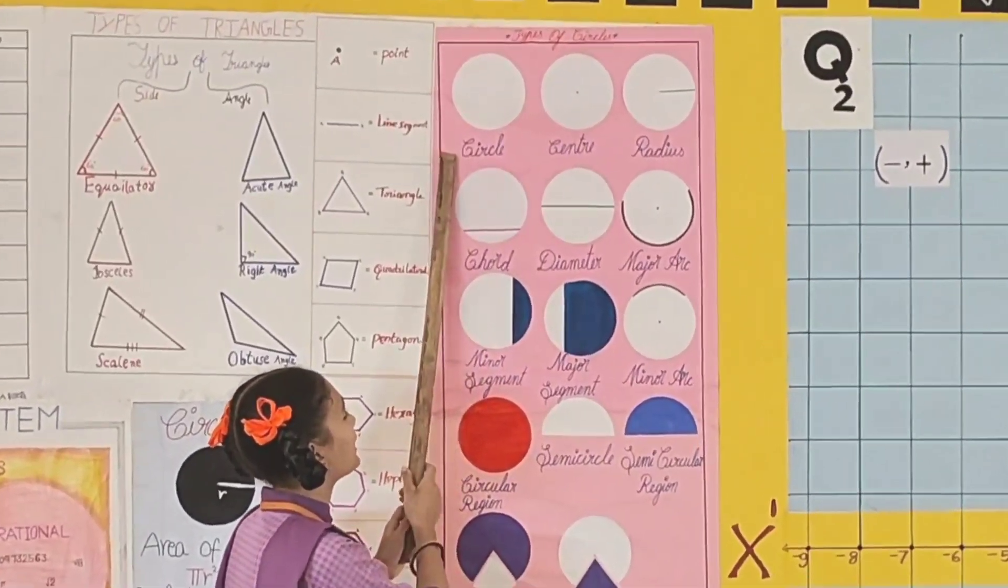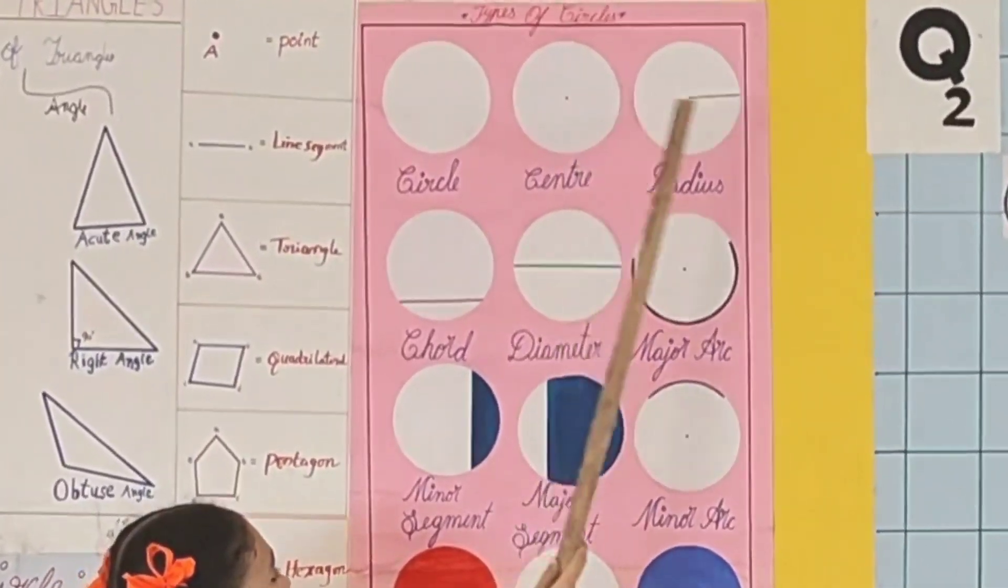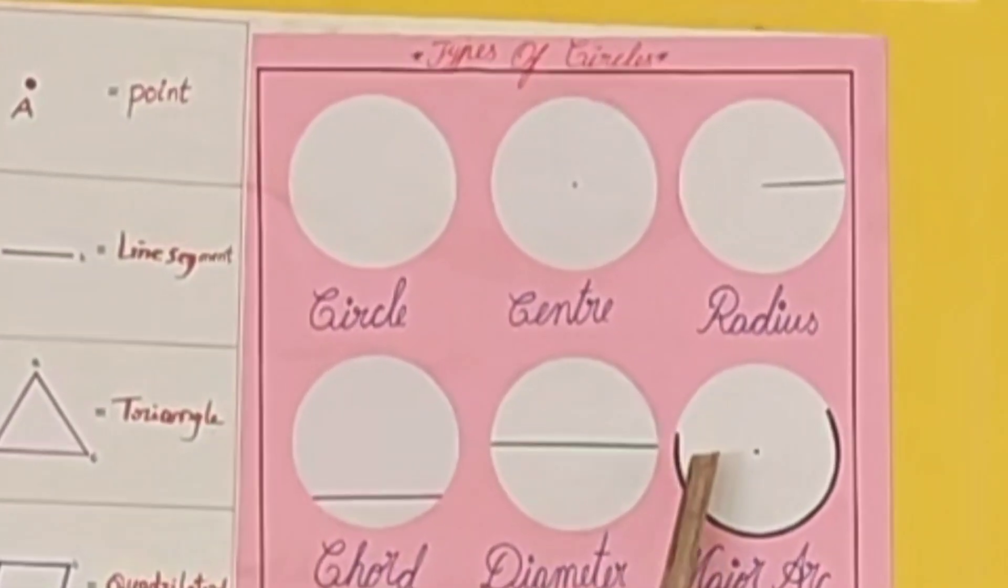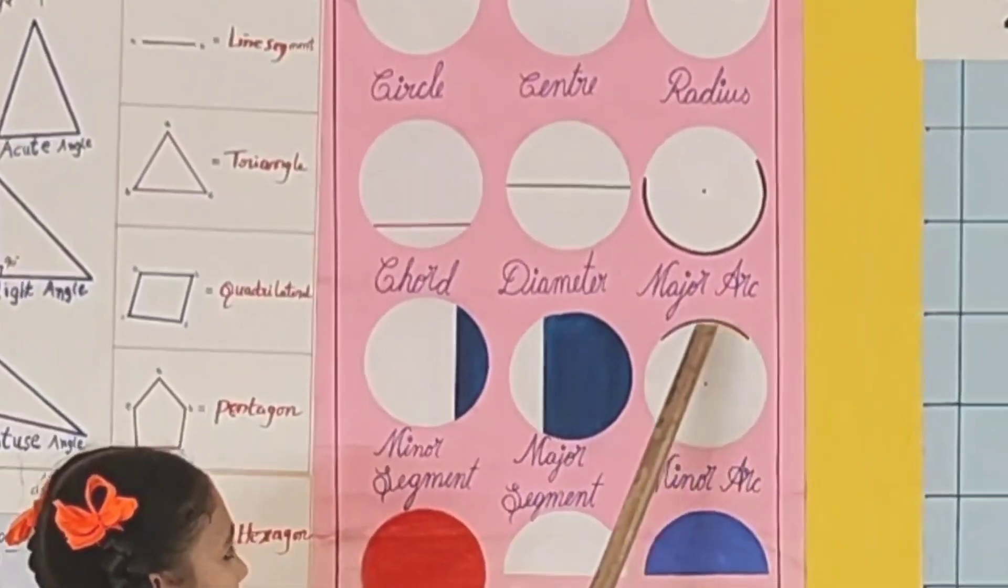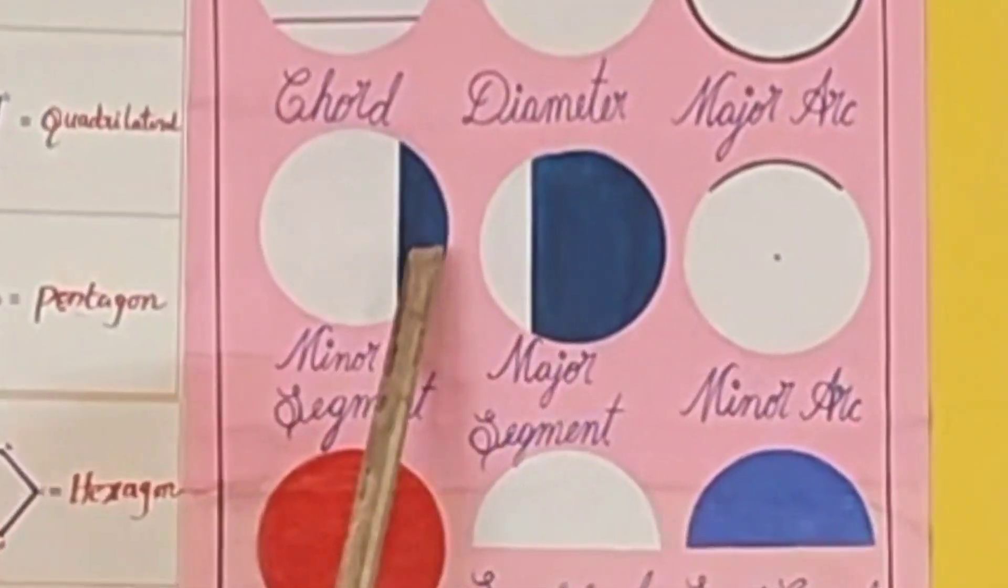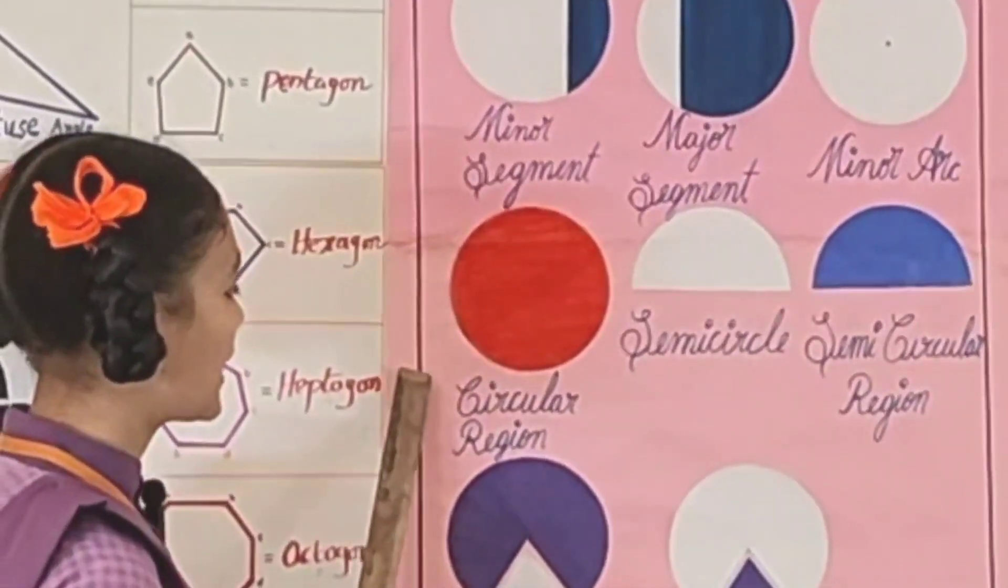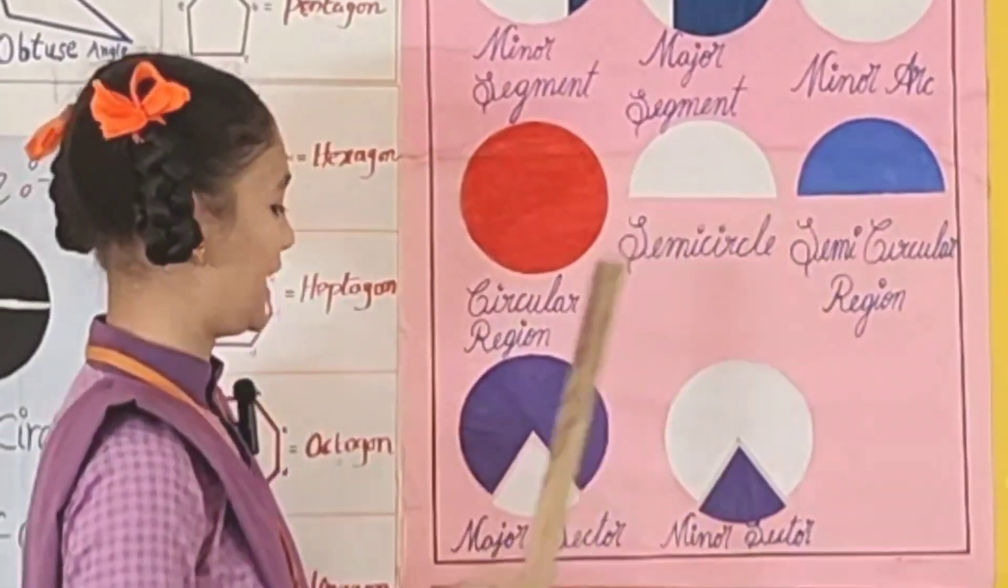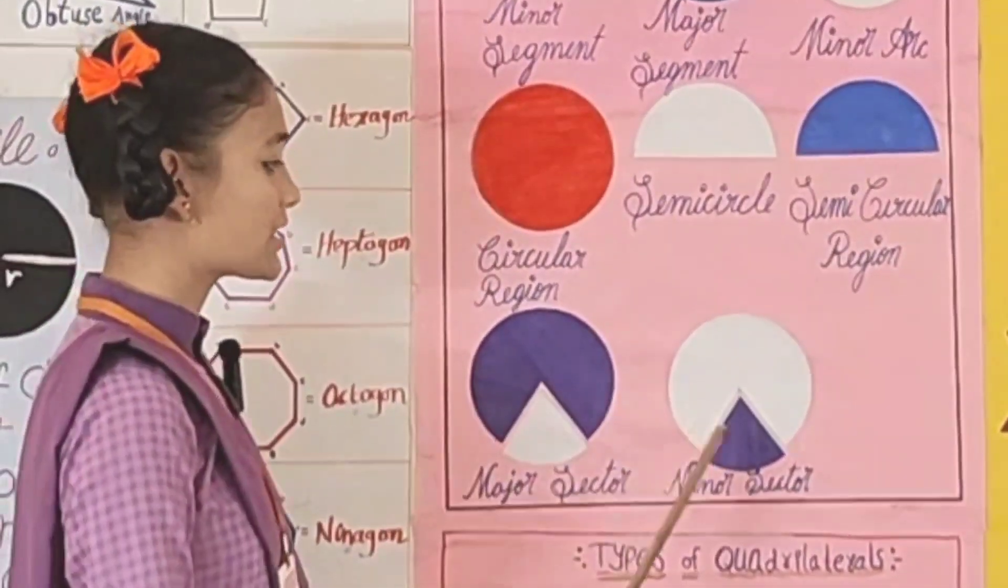Parts of circle. This is circle. In this circle: this is center, this is radius, this is chord, this is diameter, this is major arc, this is minor arc, this is major segment, this is minor segment, this is circular region, this is semicircle, this is semicircular region, this is major sector, this is minor sector.